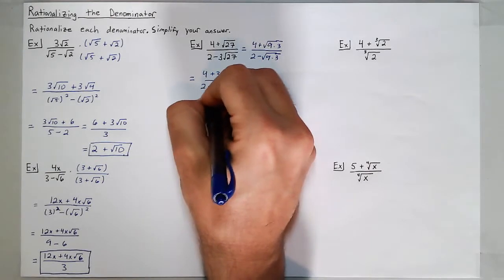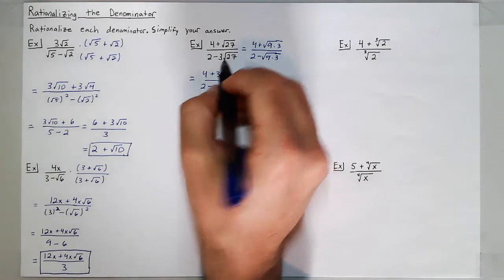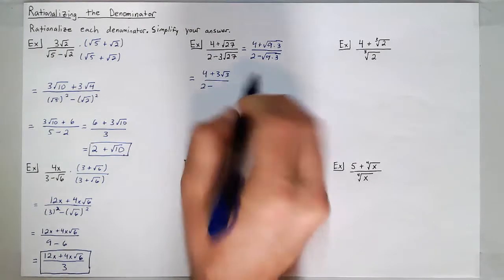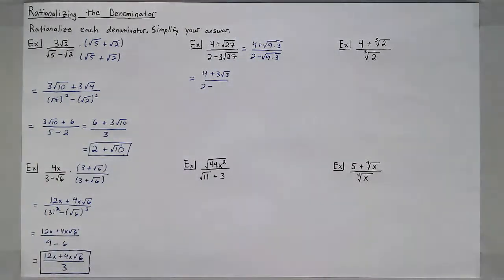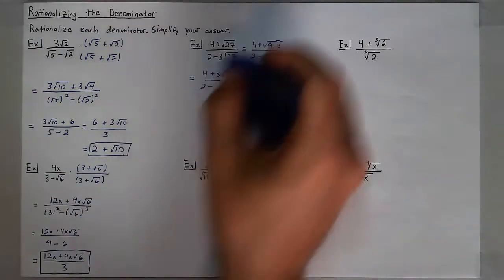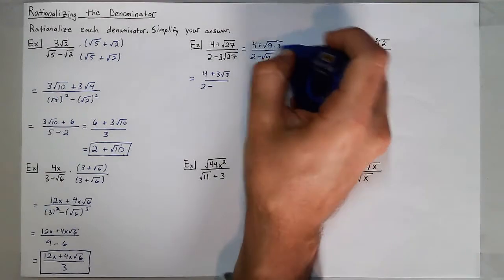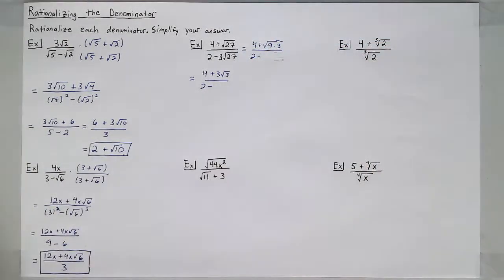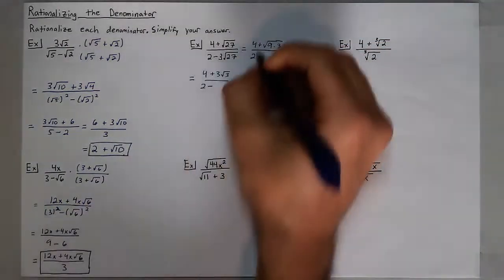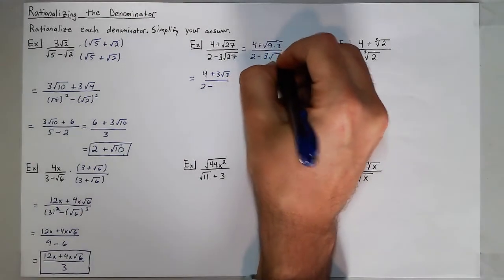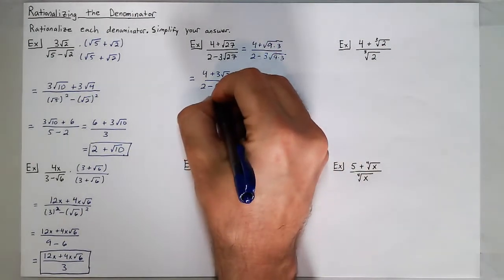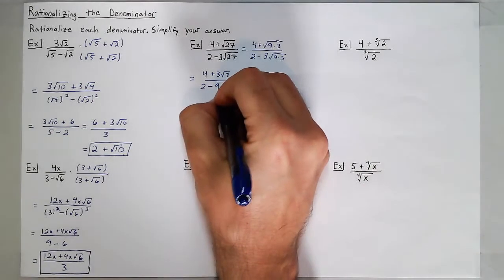It looks like a 3 was missing next to one term, so I'll make that edit. The 3 that came out multiplies by the 3 that was already there — because I have a coefficient of 3 times the square root of 9 times 3, giving me 9 square roots of 3.